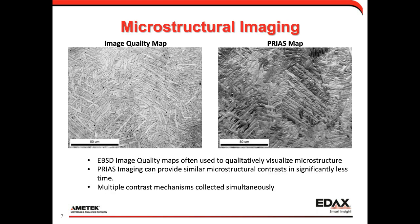The first step is microstructural imaging. The image on the left is an EBSD image quality map, which qualitatively visualizes the microstructure. On the right, we have a PRIUS map — a relatively new approach that shows similar microstructure contrast but can be collected in significantly less time. With this approach, we can also get multiple contrast mechanisms that may provide broader information about a material.